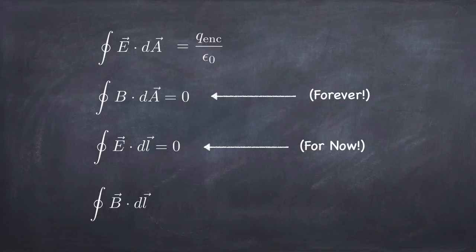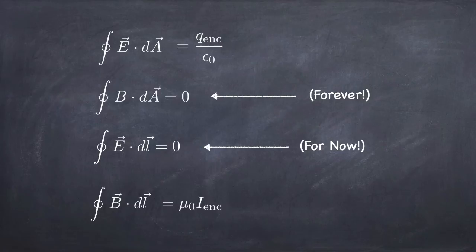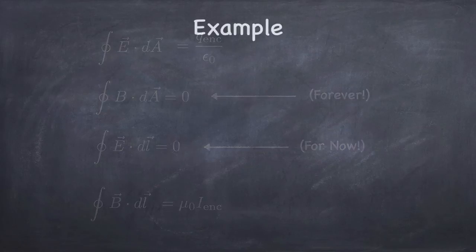Finally, the integral of B·dL around a loop depends on the amount of current enclosed. If I make a loop in space and integrate B·dL around the loop, and if current is enclosed in the loop, then this integral ends up being non-zero — in fact, it's proportional to the current enclosed in the loop. You can see that the integral of the flux of the electric field being equal to the charge enclosed, and the line integral of B·dL around a loop being equal to the current passing through the loop, are very similar to one another. Let's do a couple of examples to see how this works out.